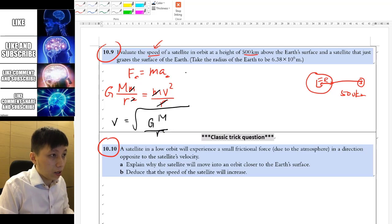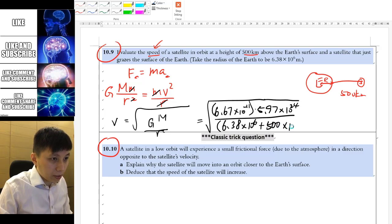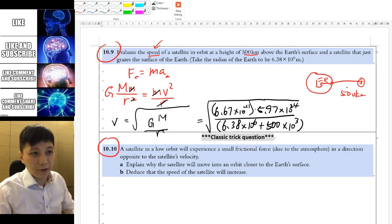And then we'll have a small m here, and then a will be using v squared over r because we want to find the speed. So we can cancel out the r and we cancel out the small m which is the satellite mass, and then we can find v equals to root GM over r.